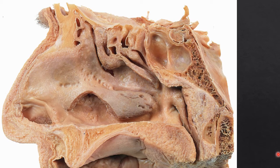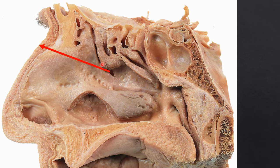Next is the maxillary air sinus. The maxillary air sinus opens into the middle meatus. They may put a probe in and ask you to identify that particular opening. The maxillary air sinus opens just below the bulla ethmoidalis — through the half-moon-shaped structure called the hiatus semilunaris. Through this hiatus semilunaris you can identify the maxillary air sinus opening.